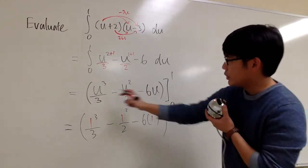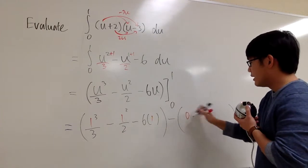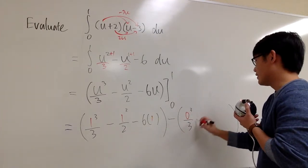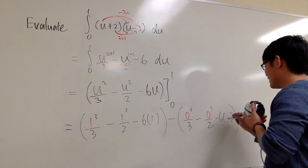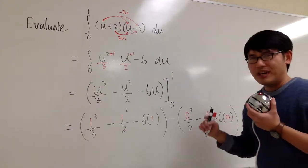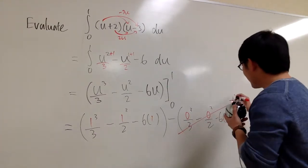Well, we have to plug in 0 into all these u's. Minus 0 to the third power. I know it's going to be 0, but let me just show you guys the work. So 0 squared over 2, minus 6 times 0. It's a good habit to show work. Anyways, all this right here, it's 0, so that's very nice.